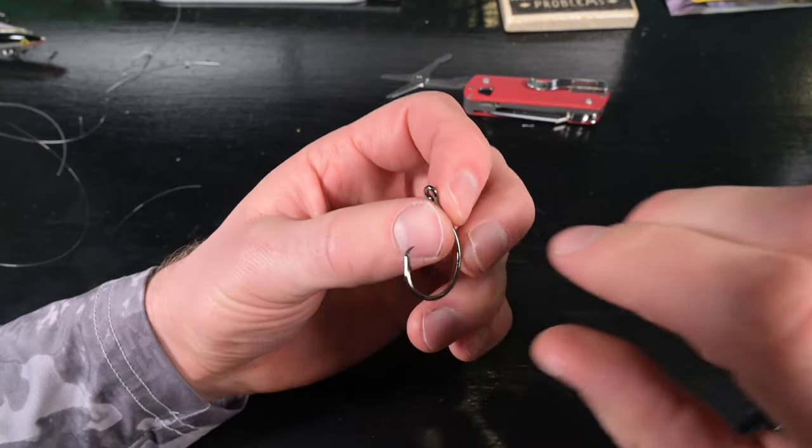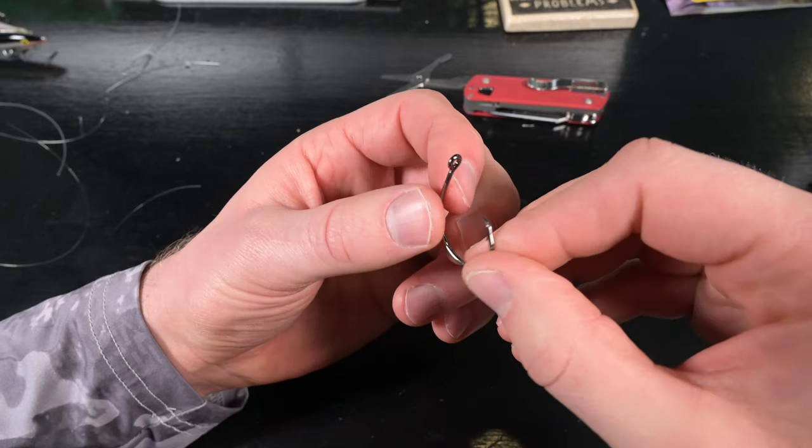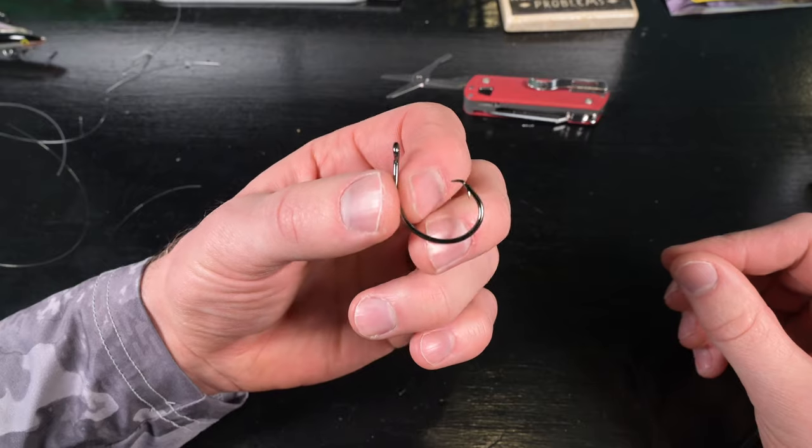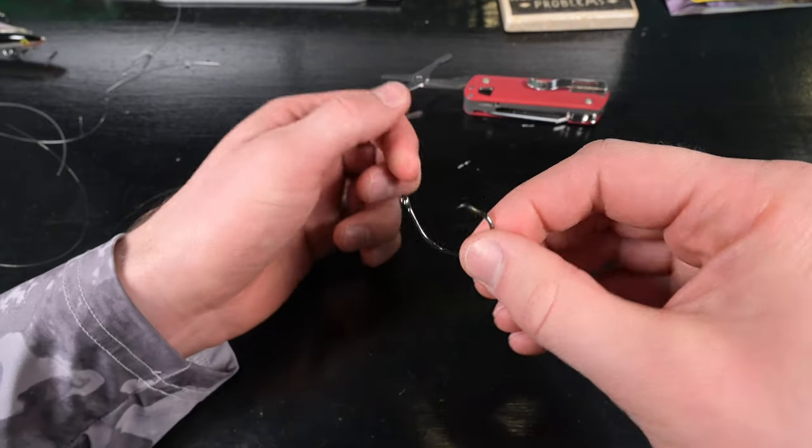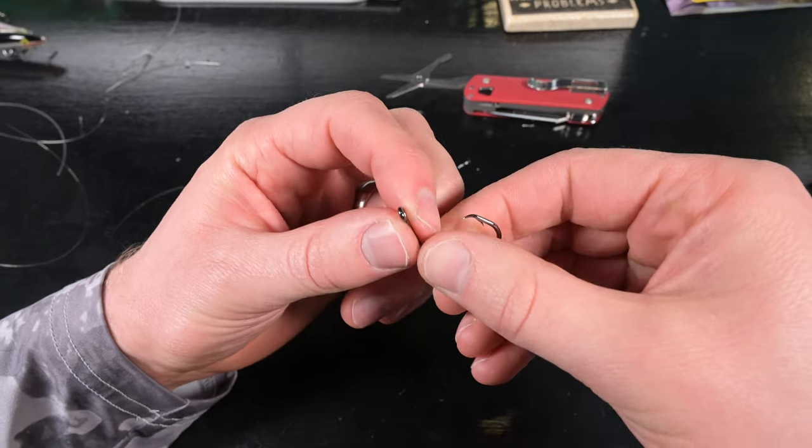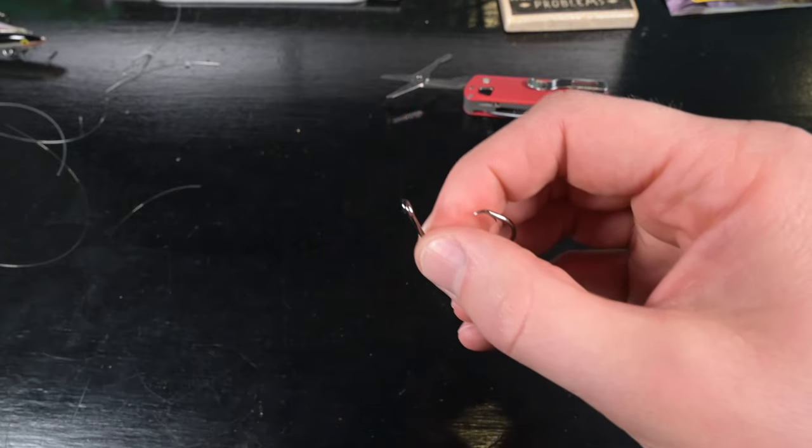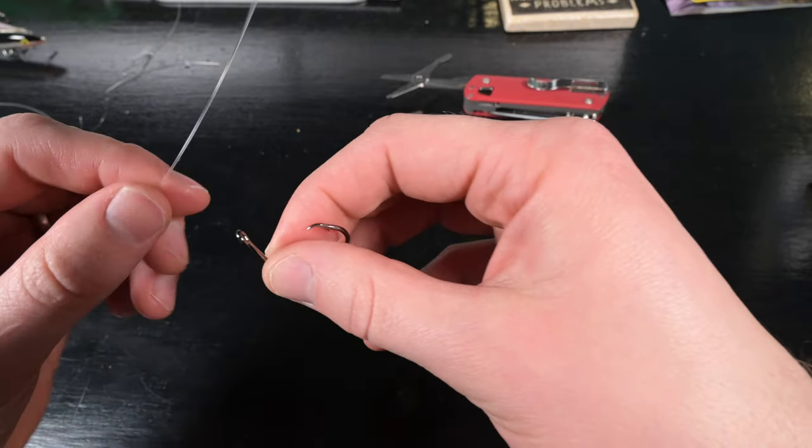Arguably the best use of the perfection knot is with circle hooks for running live bait in the saltwater flats or out in the ocean. What that does is allows the live bait to have complete and natural range of motion while connected to your line.